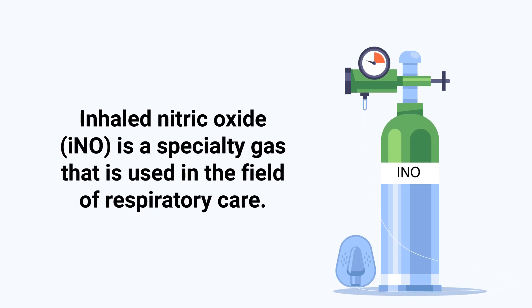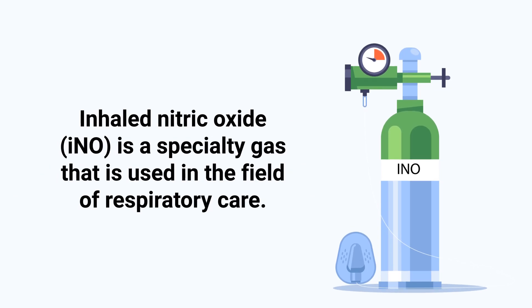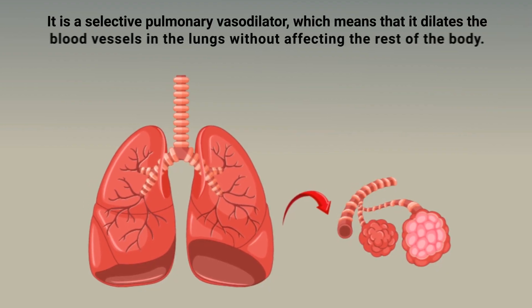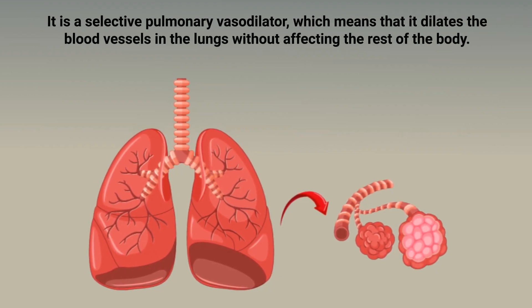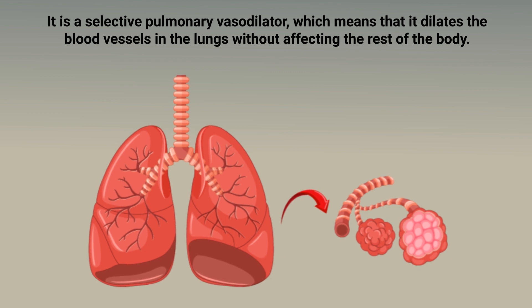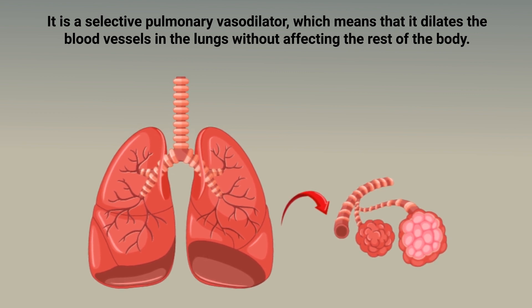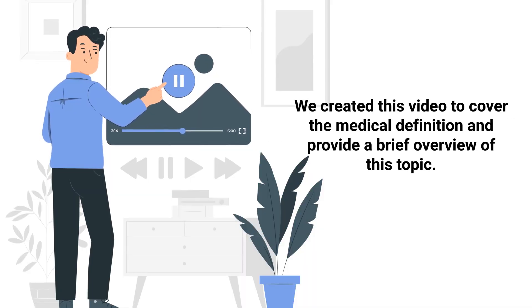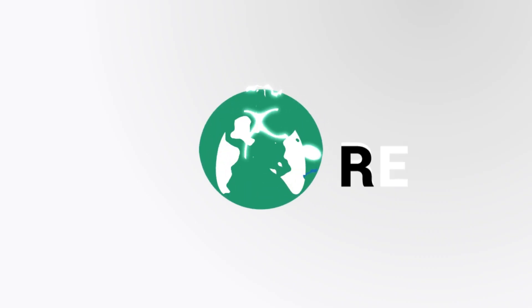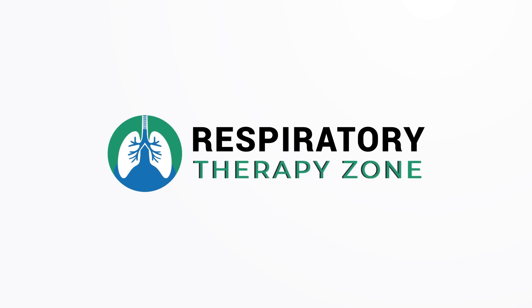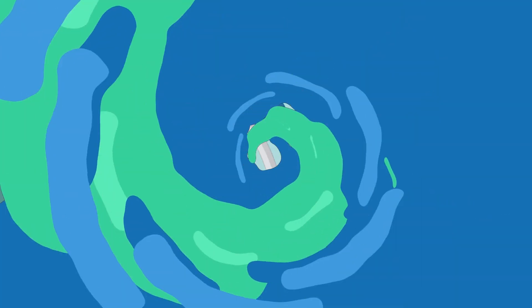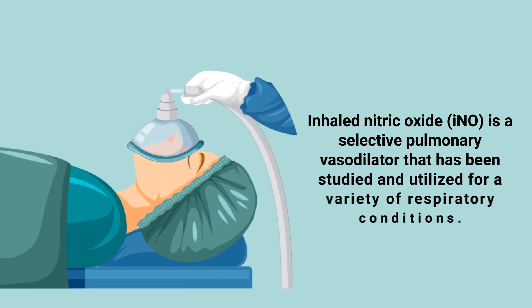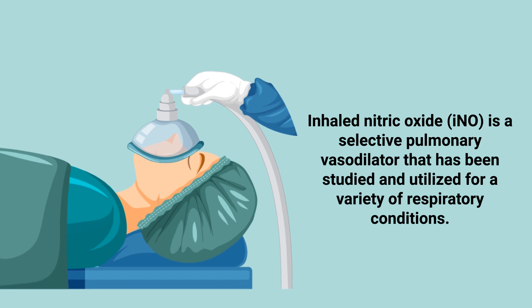Inhaled nitric oxide is a specialty gas used in the field of respiratory care. It is a selective pulmonary vasodilator, which means that it dilates the blood vessels in the lungs without affecting the rest of the body. This video covers the medical definition and provides a brief overview of this topic.